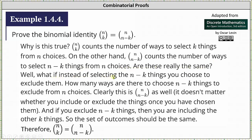Well, what if instead of selecting n minus k things you choose to exclude them? How many ways are there to choose n minus k things to exclude from n choices? Clearly this is n choose n minus k as well. It doesn't matter whether you include or exclude the things once you have chosen them. If you exclude n minus k things, then you are including the other k things. So the set of outcomes should be the same. Therefore, n choose k equals n choose n minus k.